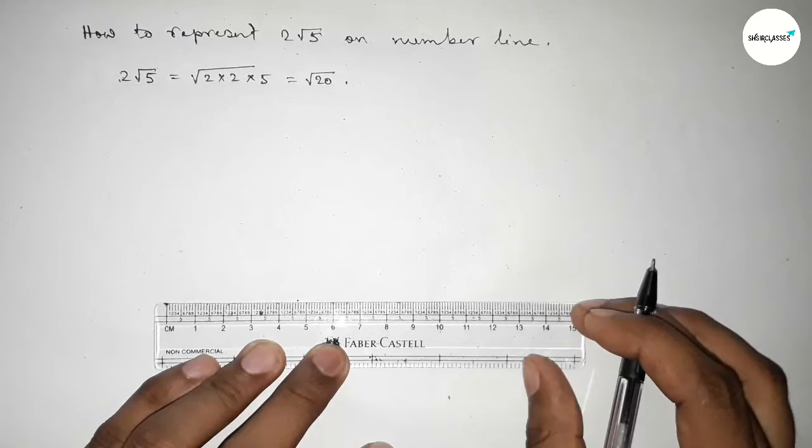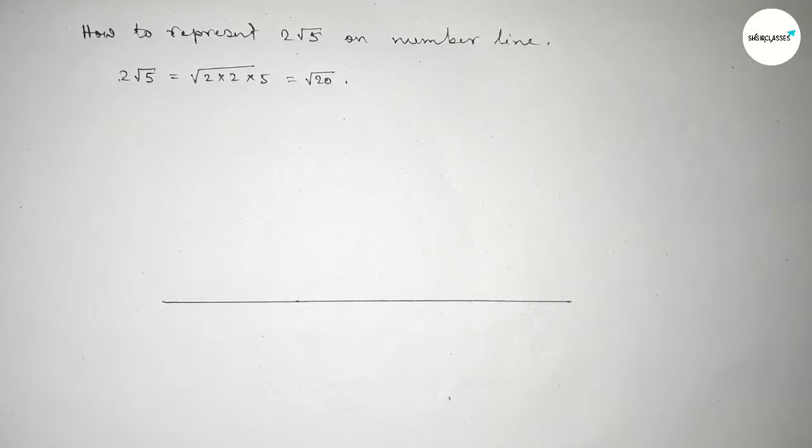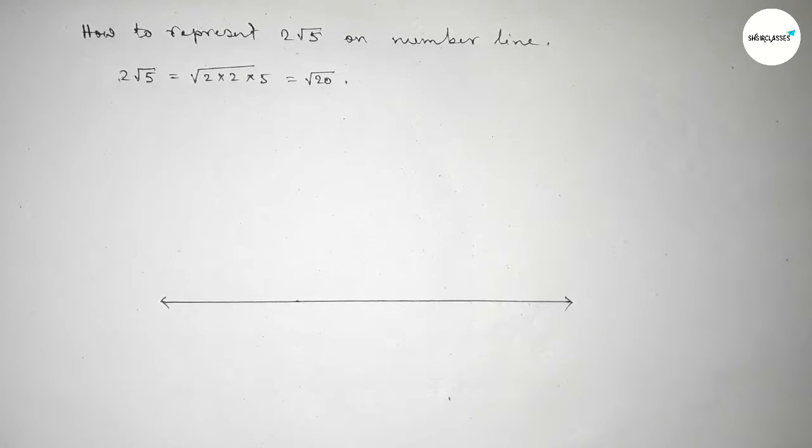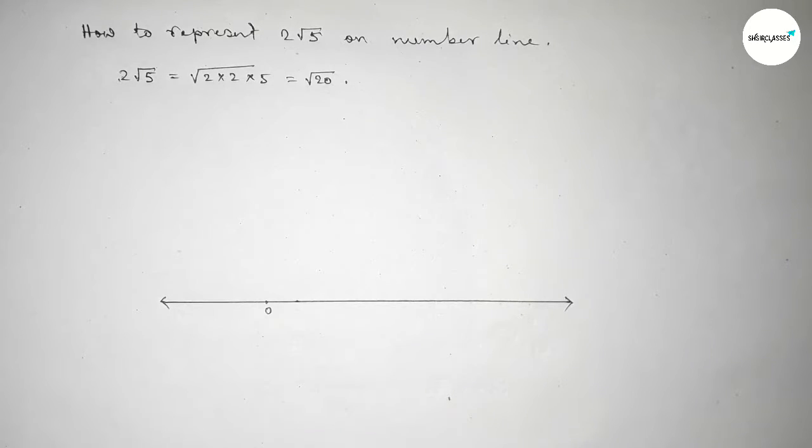First we have to draw here a number line. So first drawing here a line of any length and taking arrow mark on both sides, and taking here a starting number zero. Now using compass to mark the numbers on the line.